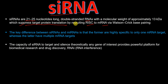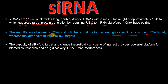In simple terms, siRNAs are small non-coding RNAs which are double-stranded in nature and they suppress the target protein translation. The key difference between siRNA and miRNA is that siRNAs are highly specific to only one mRNA target, whereas microRNAs have multiple mRNA targets.